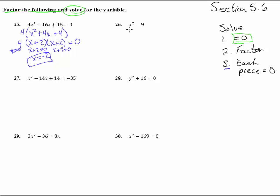So number 26, x squared equals 9. Step number one, first of all get that thing equal to zero, so let's subtract 9 from both sides and now we have it equal to zero. And we can factor, this is a difference of squares, so we get x minus 3 times x plus 3, that equals zero.